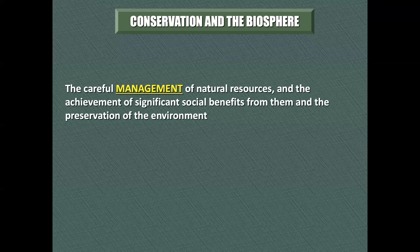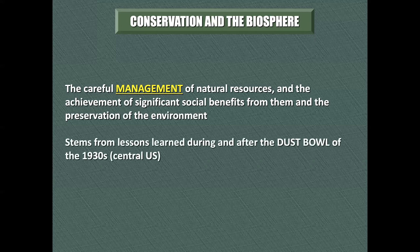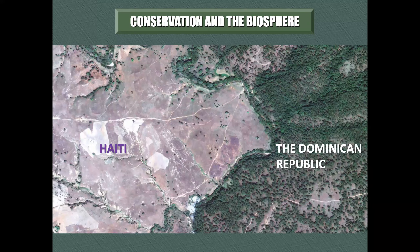Conservation is the careful management of natural resources to achieve desired social and environmental results. Lessons were learned back in the 1930s when the Dust Bowl affected Oklahoma, Texas, Kansas, Nebraska, and that whole region of the United States. Here's the idea of conservation — two countries with two very different approaches to their forests. That's Haiti on the left and the Dominican Republic on the right. Same climate, but there's a lot more deforestation going on in Haiti. As a result, that shows in how much soil is lost and how little vegetation is seen on one side compared to the other.